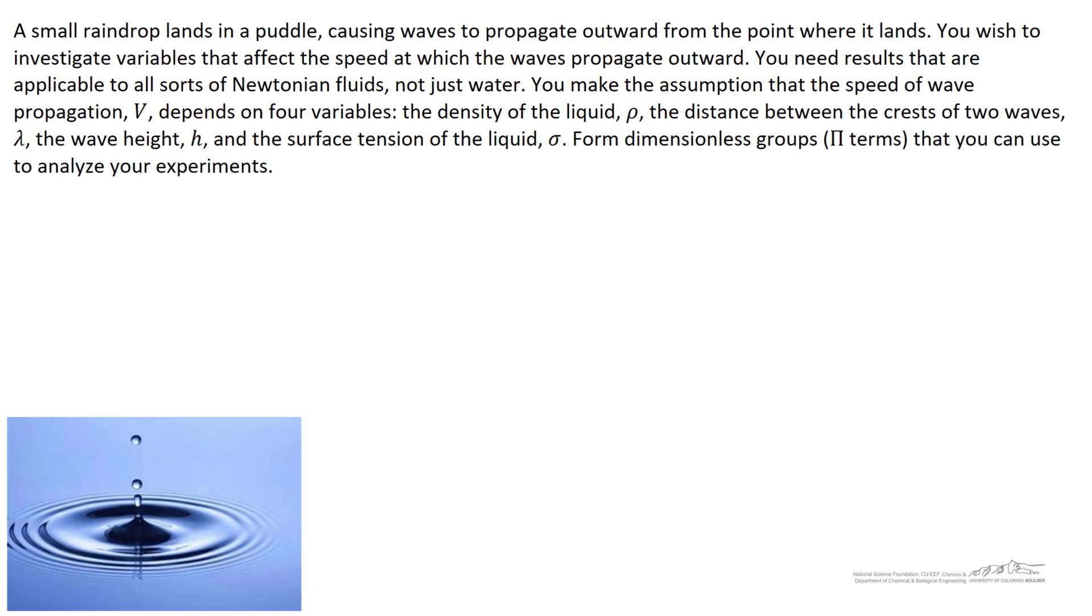So let's do the dimensional analysis. Let's find the pi terms. The number of dimensions that we're dealing with is r equal to 3, and that is mass, length, and time. And this means that we need to choose 3 repeating variables.